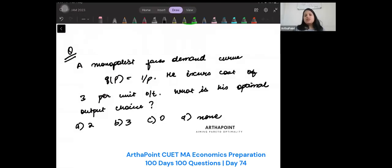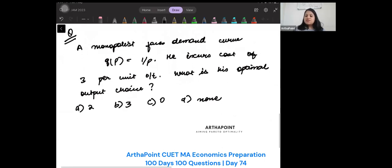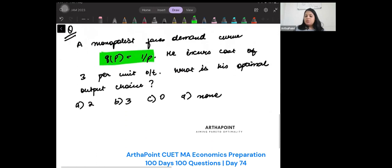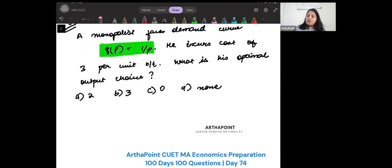Hi, good evening everyone. Let's quickly take the question of the day. A monopolist faces demand curve Q is equal to 1 by P. This is a very common question. But before I go ahead, I just want to make an announcement.